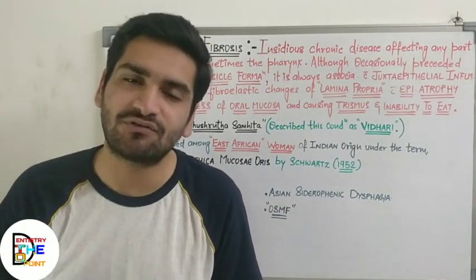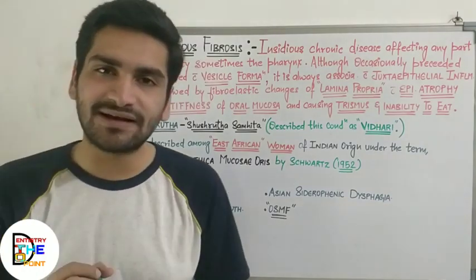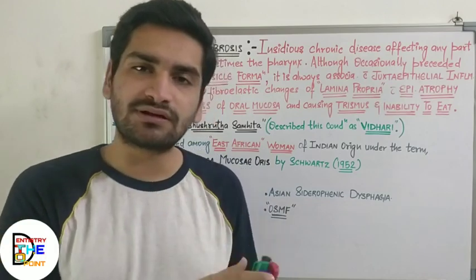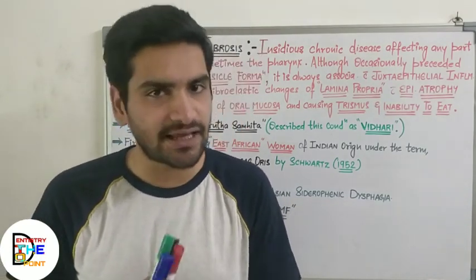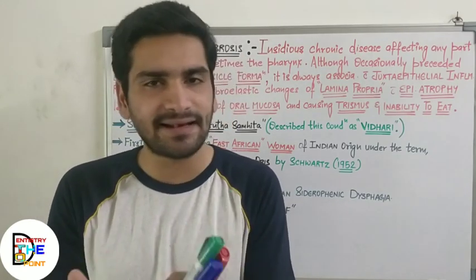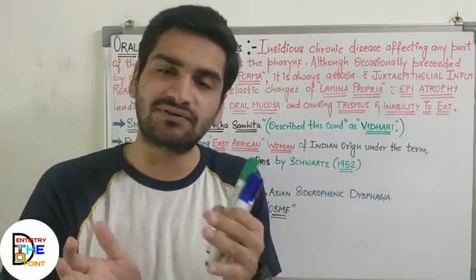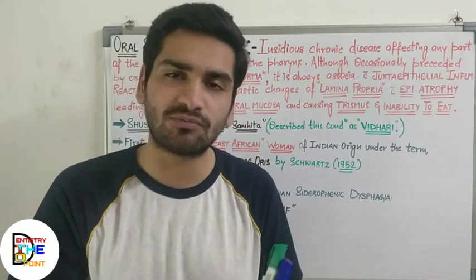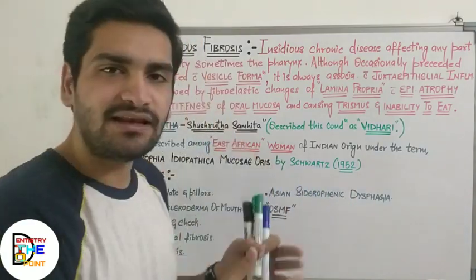Welcome back to our channel, Dentistry to the Point. In this video we are going to discuss oral submucous fibrosis — the most common pre-malignant condition seen in people who consume oral forms of tobacco along with supari, areca nut, or lime, who consume large amounts of spicy food, and in people with genetic predisposition, nutritional deficiency, and autoimmune problems. These are the various etiopathological factors of this condition.